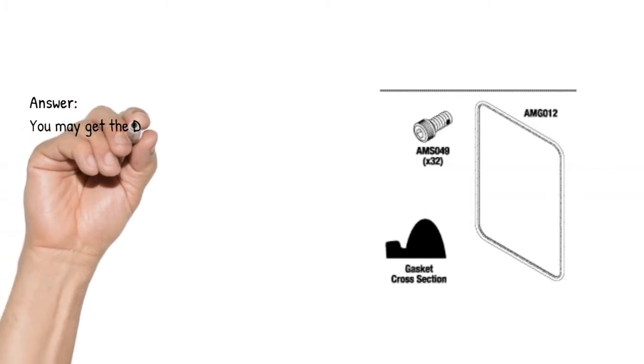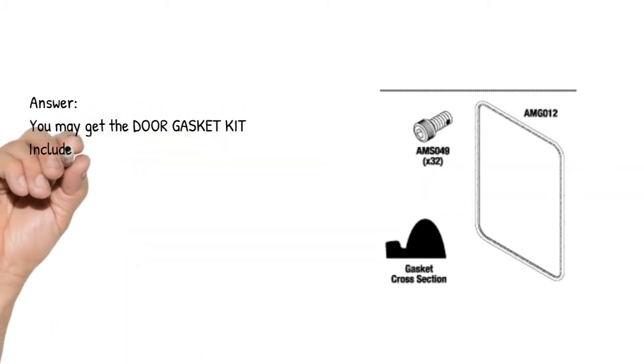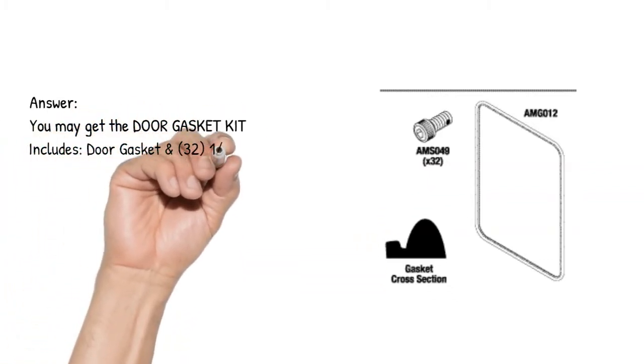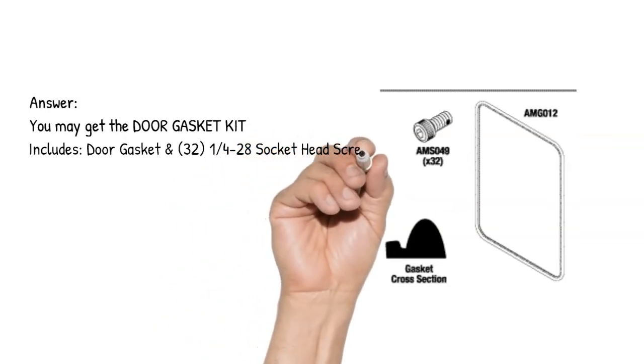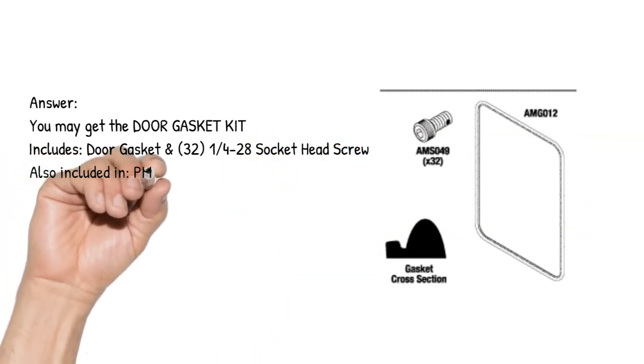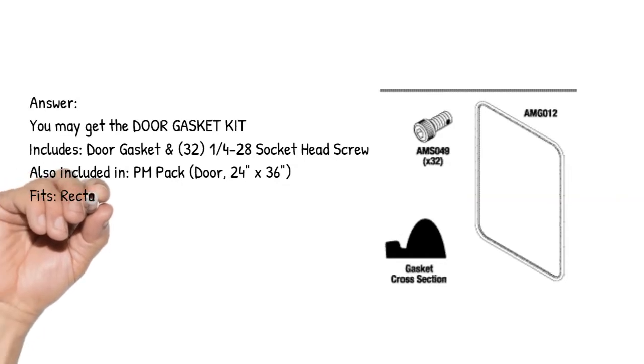You may get the door gasket kit which includes a door gasket and thirty-two 1/4-28 socket head screws. Also included in the PM Pack for a door measuring 24 inches by 36 inches.